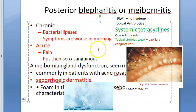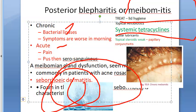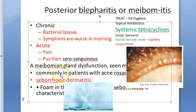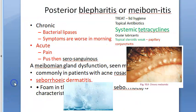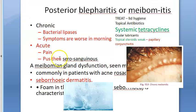To summarize: meibomitis is posterior blepharitis, which is why systemic treatment is given. It has chronic and acute forms. A key feature to remember is foam in the tears and foam sitting in the medial canthus. In the next video we will look at parasitic blepharitis or lash infestation.